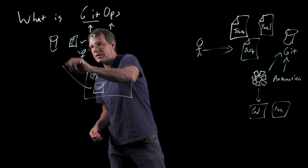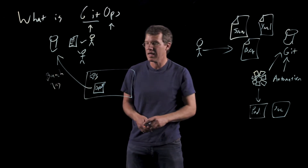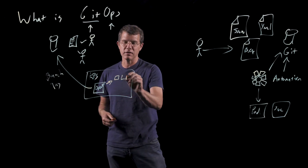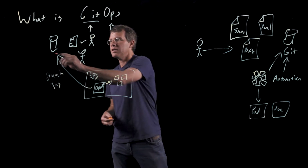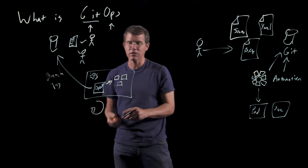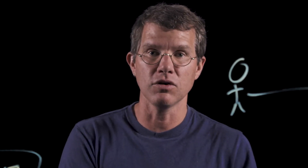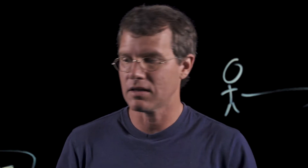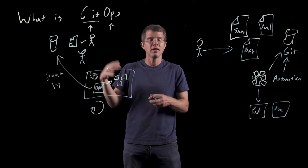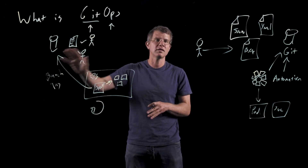This operator is listening to the Git repository — listening at a particular branch and a particular tag within that branch. Whenever it notices a change between the description of what should be in the cluster (as expressed in the Git repository) and the actual things inside the cluster, it takes action. You can think of this like a thermostat: you set the temperature to 75, and depending on the room temperature, the thermostat heats or cools to achieve your desired state. The GitOps operator works the same way — it treats the Git repository as the desired configuration and takes actions inside the cluster to match that desired state.